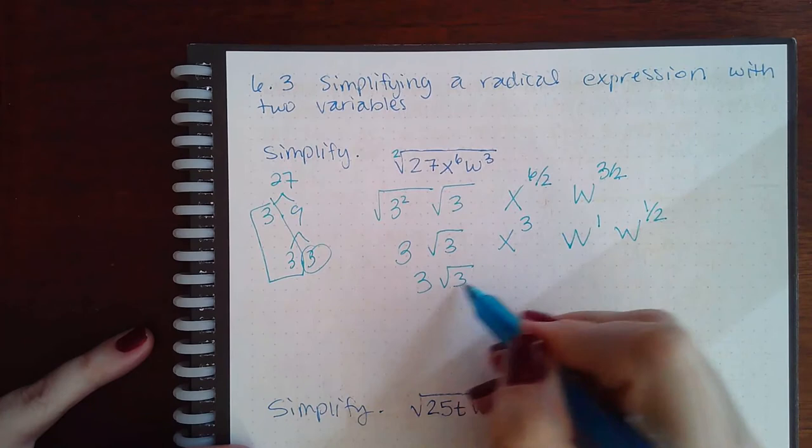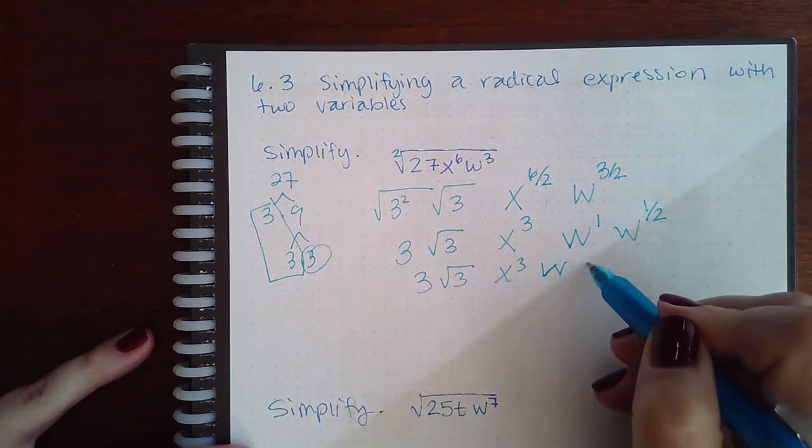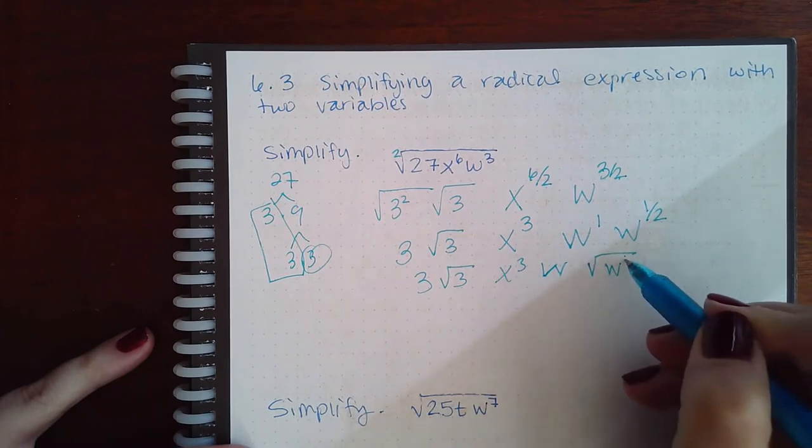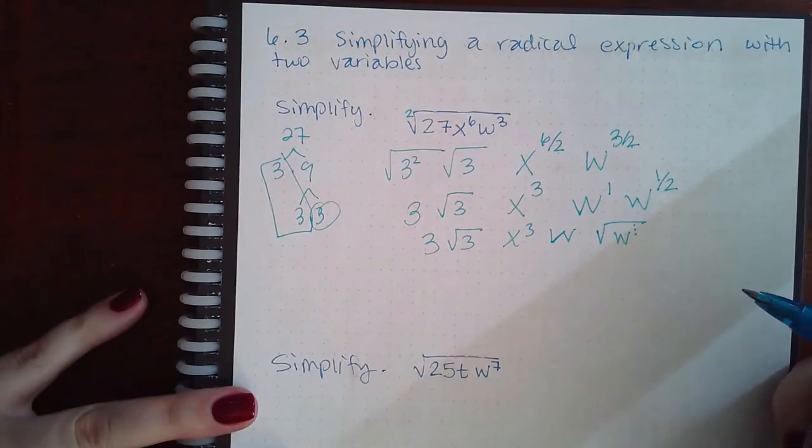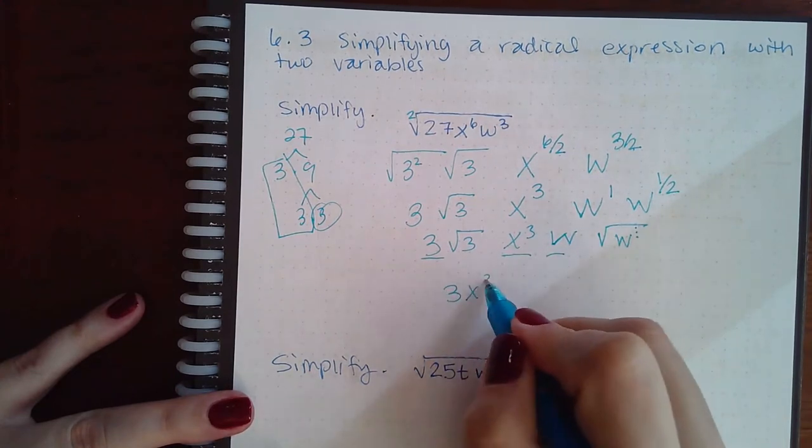square root of 3, x to the third, w, and then the square root of w to the first power, or just w. So take all of the outside and multiply them together: 3x³w